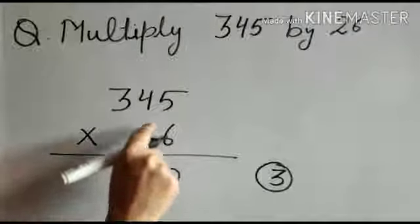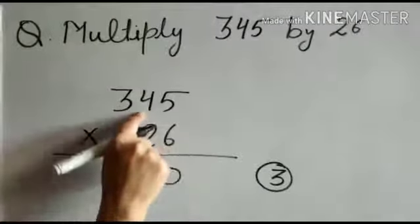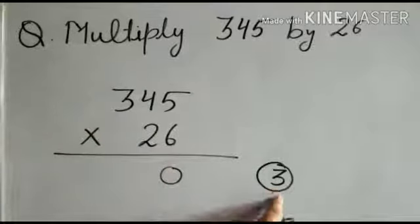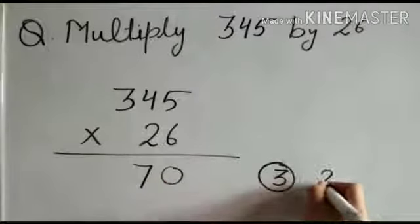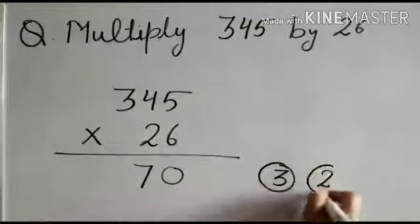Then we multiply 6 by 4. 6 times 4 is 24, plus 3 carry equals 27. Write 7 here and 2 here as carry.